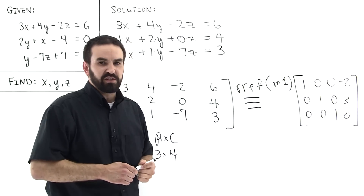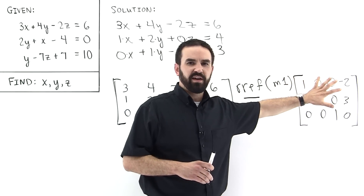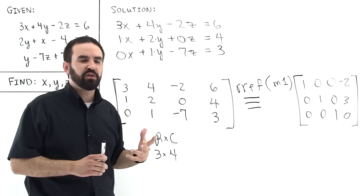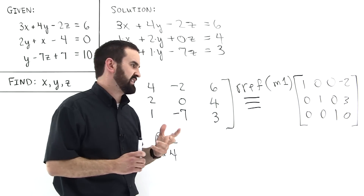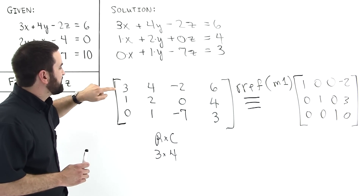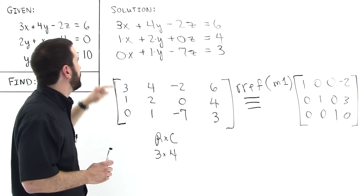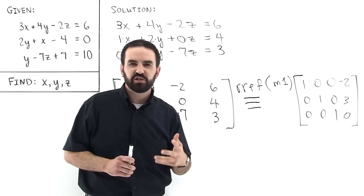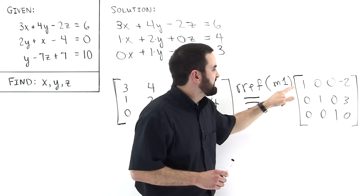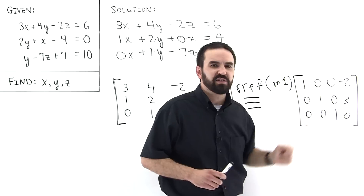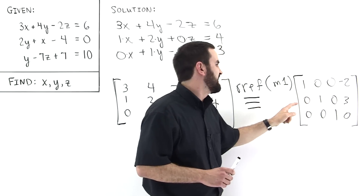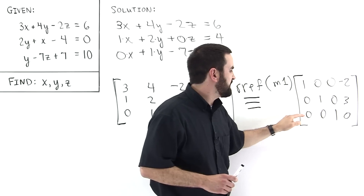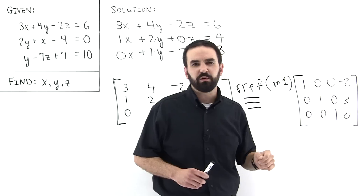Let's take a look at what this new matrix is telling us. I claim that this new matrix is in essence conveying the same information that the original matrix was conveying. The way the matrix speaks to us: the first row says 1 times x plus 0 times y plus 0 times z equals minus 2, so x equals minus 2. The second row says 0 times x plus 1 times y plus 0 times z equals 3, so y equals 3. The third row says 0 times x plus 0 times y plus 1 times z equals 0, so z equals 0.